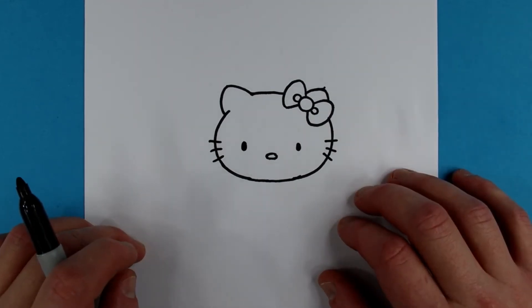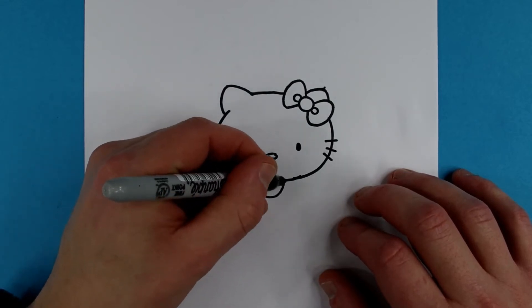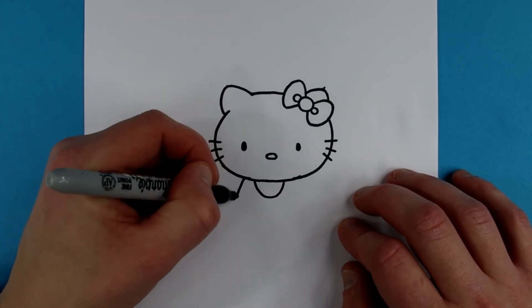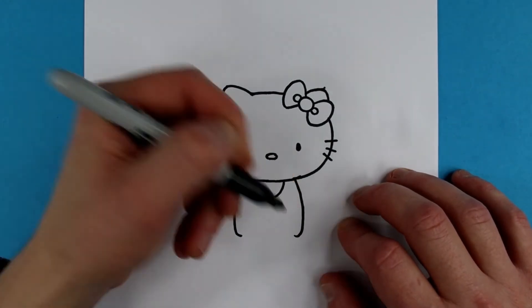Gonna come over to the body. I'm going to make a U-shape underneath her head like this. And then one arch like this. And on the other side, the same. Curving in.